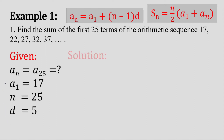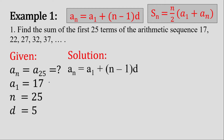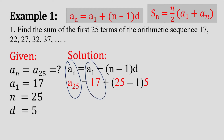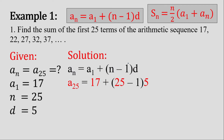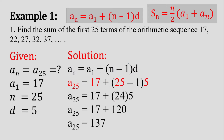With these givens, let's first find what a sub 25 is before we get the sum of the first 25 terms. We will use the arithmetic sequence formula and substitute the values: a sub 25 for a sub n, 17 for a sub 1, 25 for n, and 5 for d. Evaluating the equation, we get the value of 137 for a sub 25.